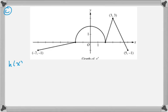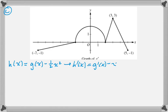Part c is a little challenging because they define a new function h(x), which is g(x) minus ½x². It turns out this isn't really that bad by construction. We find h prime, which will just be g prime minus x. We're looking for the critical points of h(x), so that's when h prime is either 0 or undefined. But h prime is defined everywhere, so we're just looking for where it's 0.